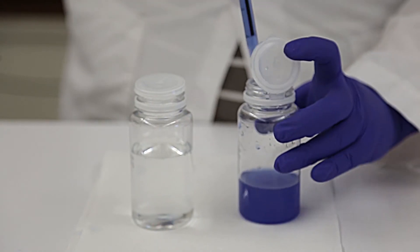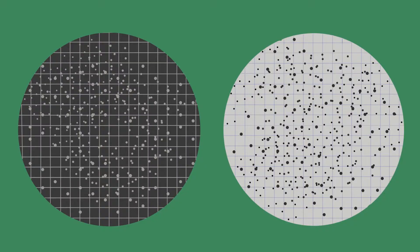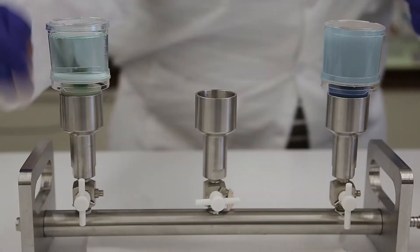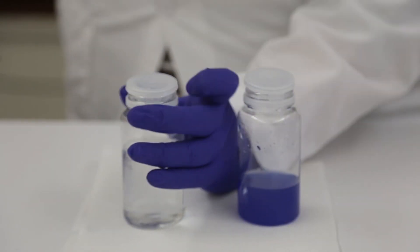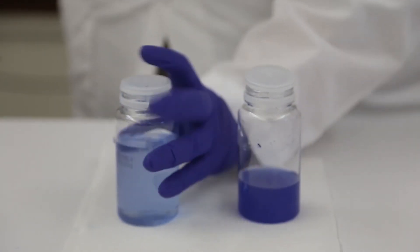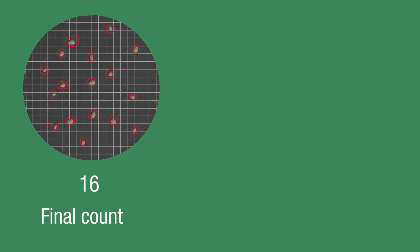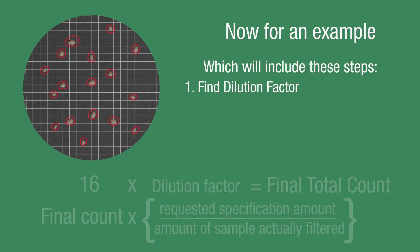At times, you may need to dilute your samples. This may be necessary if your samples have results that are too numerous to count (TNTC), or if you need to increase the filtration efficiency of your sample. Typically, when a sample is diluted, the dilution needs to be taken into account when reporting results. This can be done through a calculation that uses your final count and a dilution factor. The following example shows how to calculate a dilution factor, and then calculate your final result using the dilution factor.